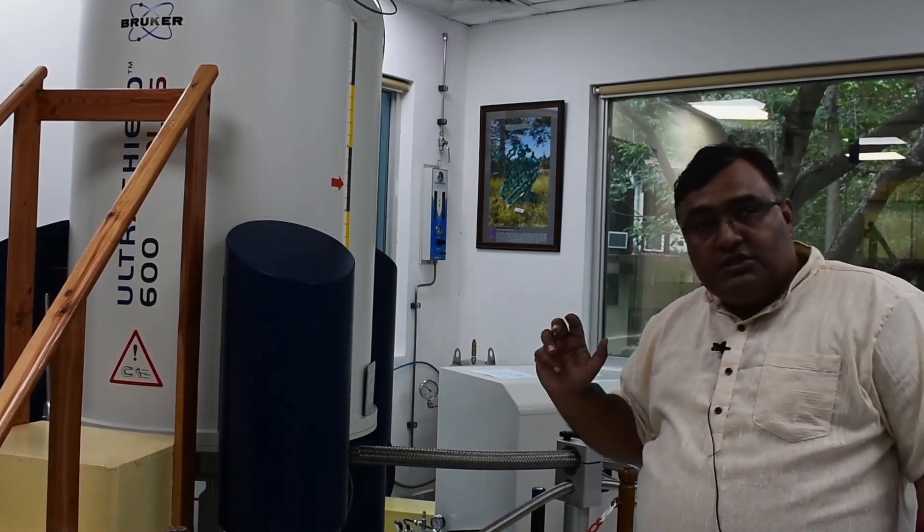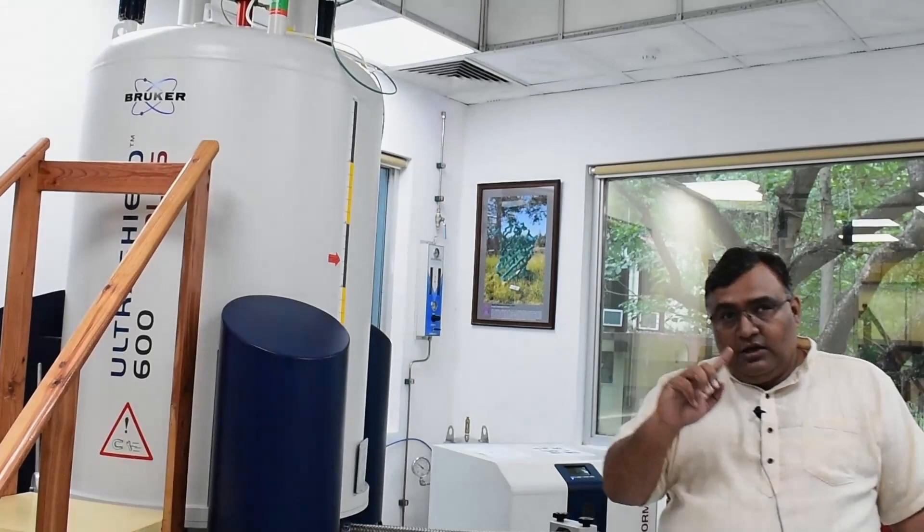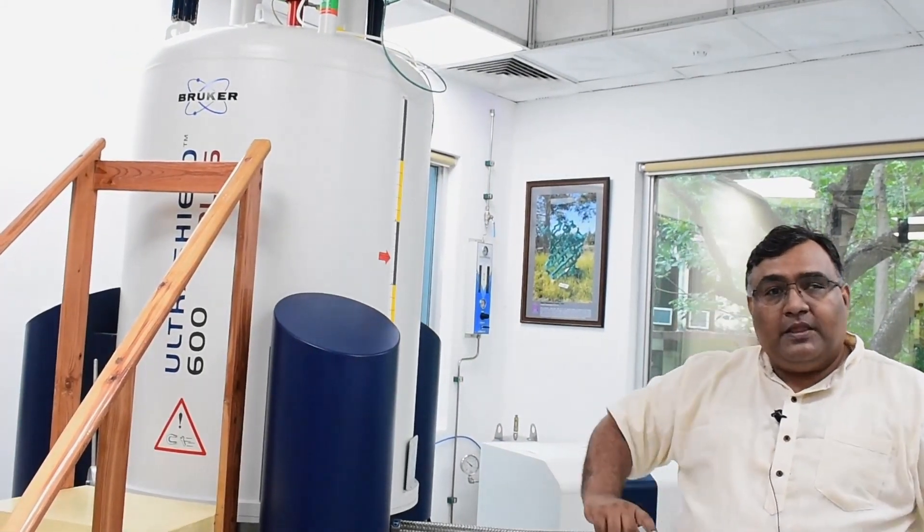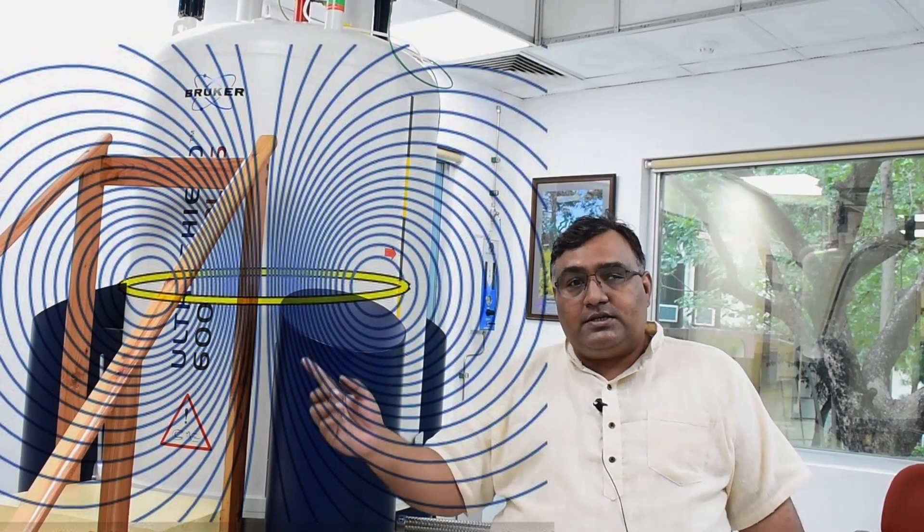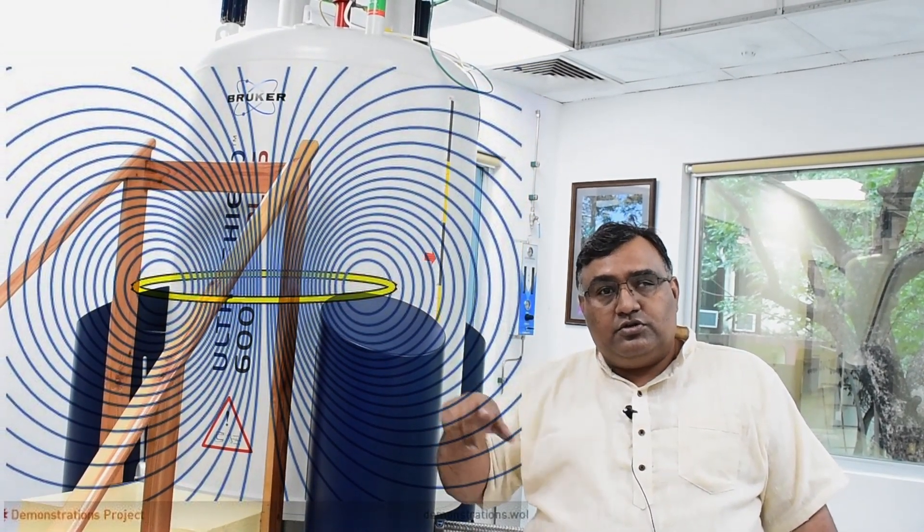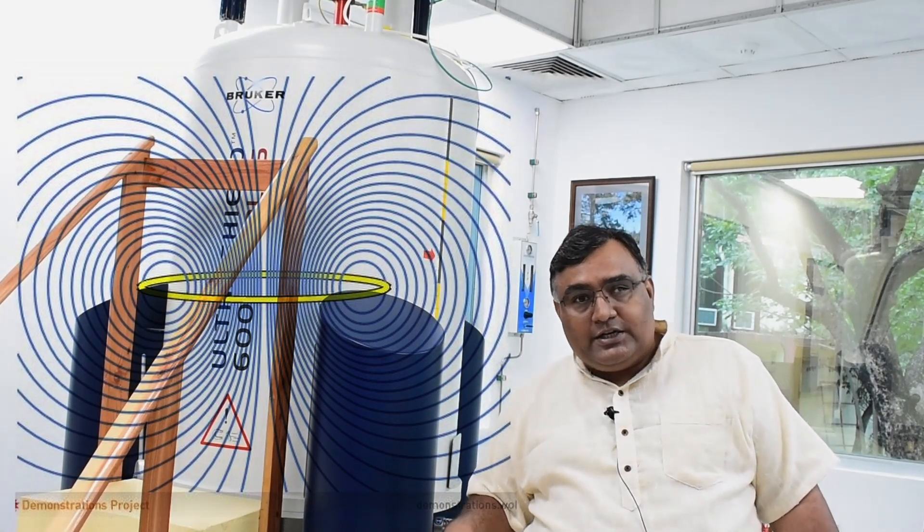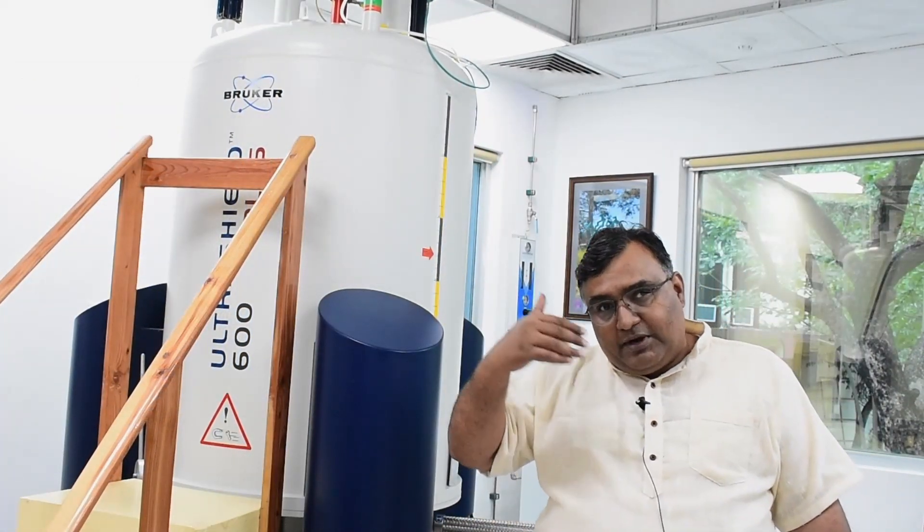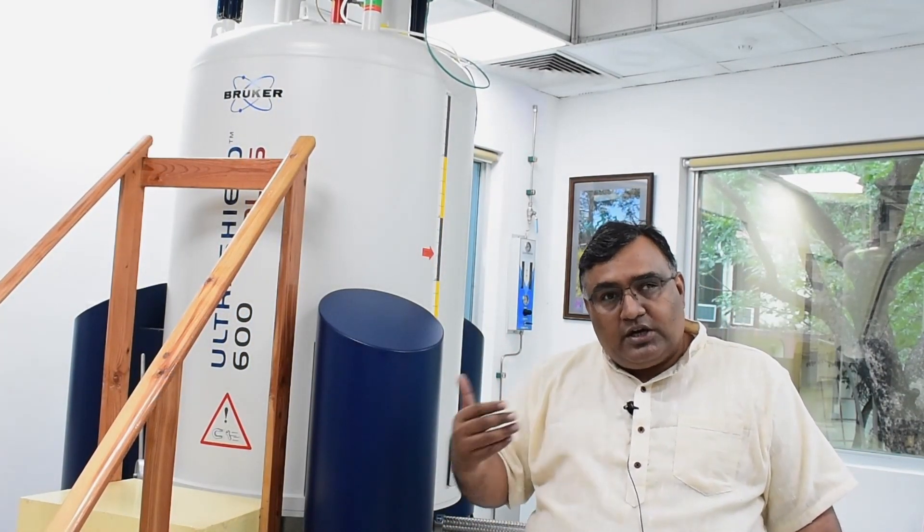Superconducting technology is a technology in which you have a coil that conducts electricity. If you pass current through a coil, it generates a magnetic field which is orthogonal to the plane of the flow of electrical current. And to enhance the magnetic field, you have to pass more and more current.